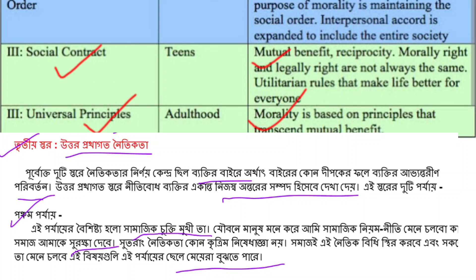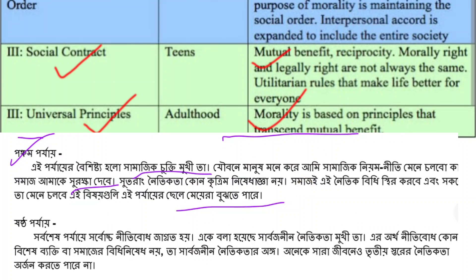Stage 6 is the universal ethical principles orientation. This is the highest stage of moral development. At this stage, morality is guided by internalized universal ethical principles that go beyond societal laws. These principles apply to all of humanity and are not limited to any specific society or individual.